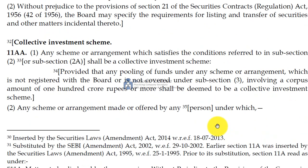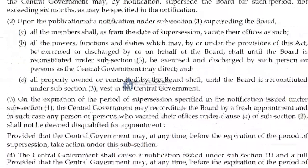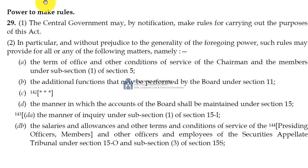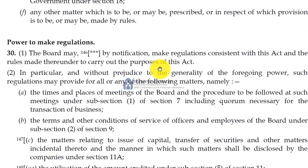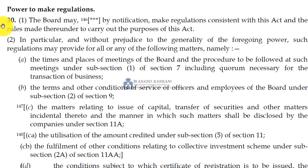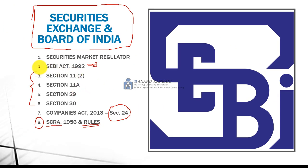Now let's quickly move to Section 29. Section 29 deals with the power to make rules and the power to make rules is given to the central government. The central government may by notification make rules for carrying out the purposes of this act. You just need to remember that rules can be made by the government, and then Section 30 gives SEBI the power to make regulations. The board may by notification make regulations consistent with the act and the rules made thereunder to carry on the purpose of the act. So we have discussed SEBI Act Sections 11, 11A, 29 and 30.